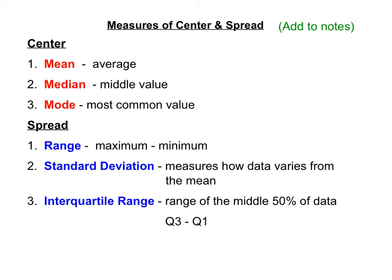We've also looked at three measures of spread: range, standard deviation, and interquartile range. Range is the difference between the maximum and minimum values. Standard deviation is a measure of how data varies from the mean. Interquartile range is the range of the middle 50% of the data, calculated as Q3 minus Q1. Make sure you add this to your notes because you'll need to know the difference between measures of center and measures of spread for homework and for the test.